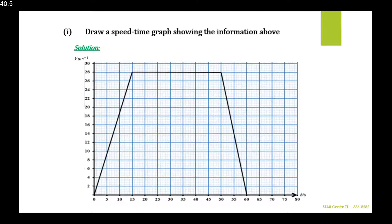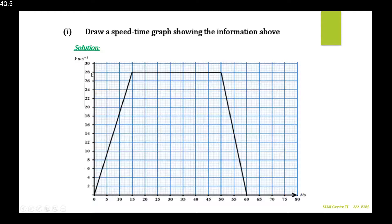Solution. Looking at the graph: the car is stopped at a traffic light — that's at the origin, not moving. When the light turns green, it accelerates uniformly to 28 meters per second in 15 seconds. So the line goes upwards, and at 15 seconds on the x-axis it reaches 28 meters per second on the y-axis.